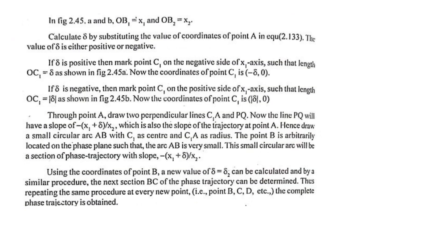To summarize the delta method: calculate δ by substituting the coordinates of each point. If δ is positive, c is on the negative x-axis side at (−δ, 0); if negative, c is on the positive side at (+|δ|, 0). Draw a small arc with the current center and radius. Find the next point, substitute into the δ equation, find the new center, draw the next arc. Continue the process repeating these steps until the trajectory reaches the origin.